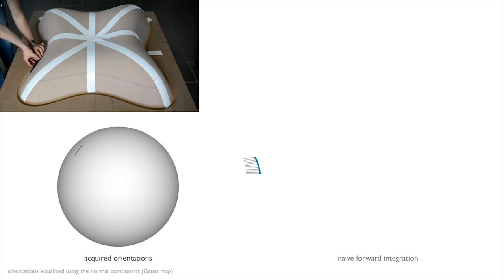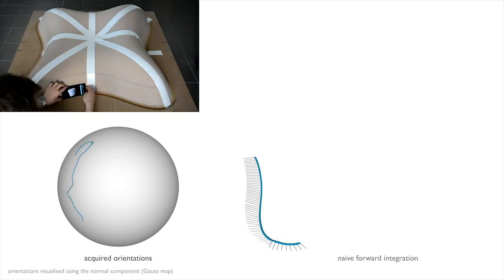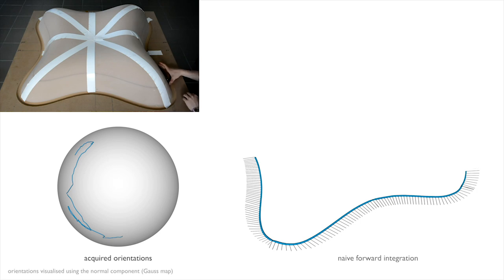In our framework, a sensor-instrumented device is moved along a network of curves on the surface, and we record orientations, distances, and curve intersections.